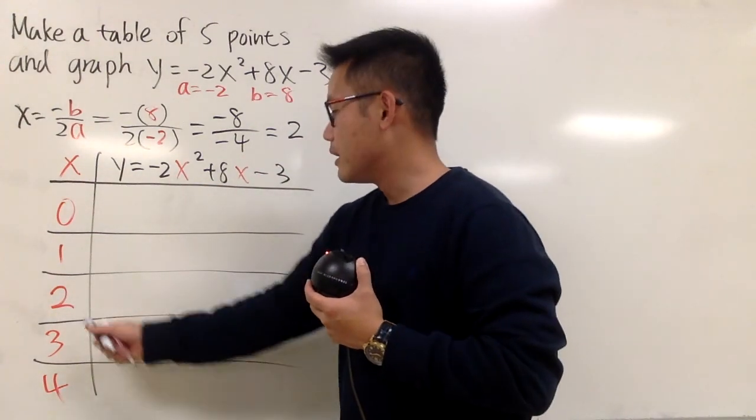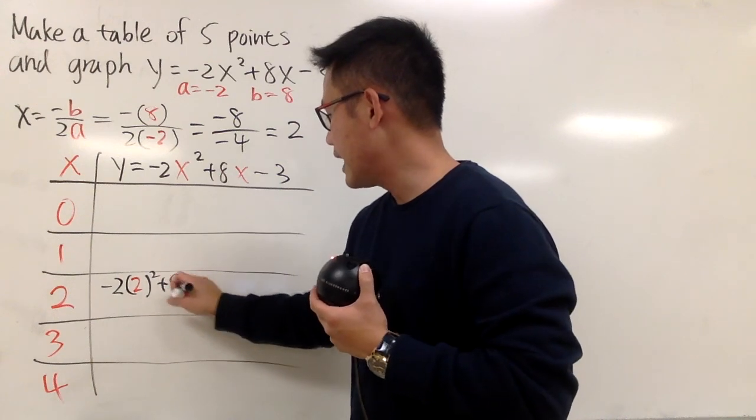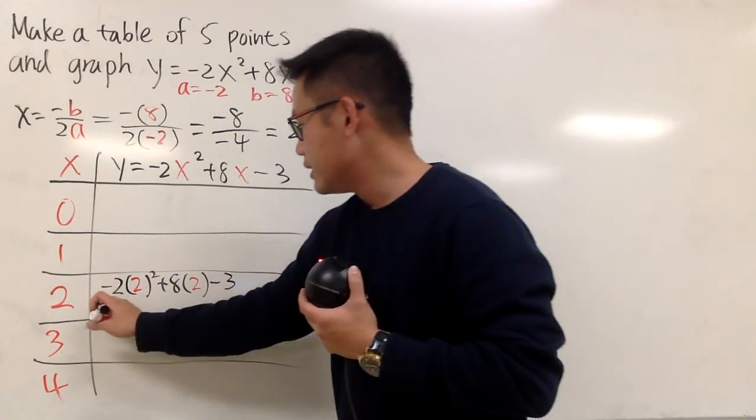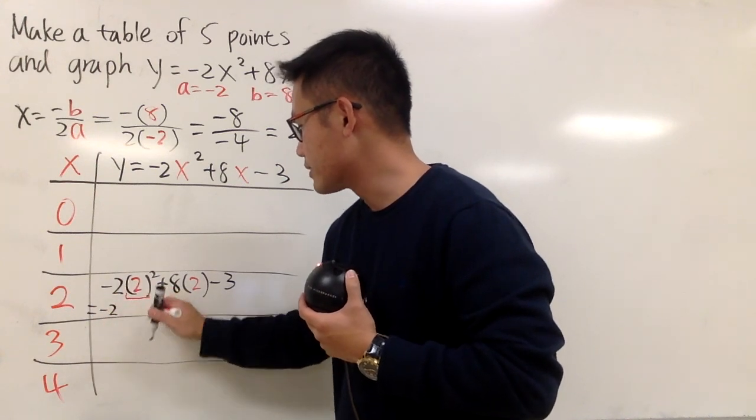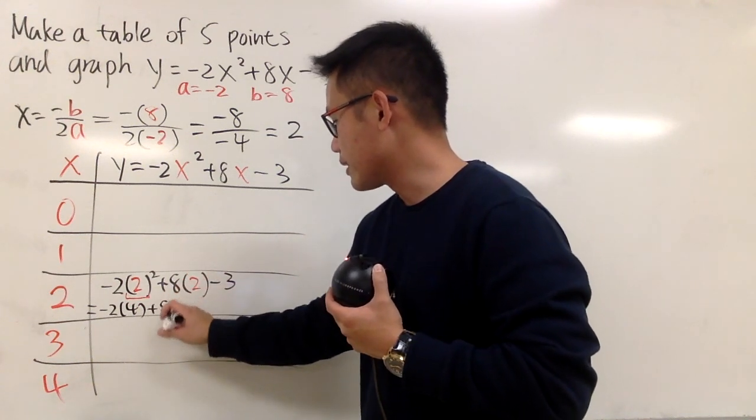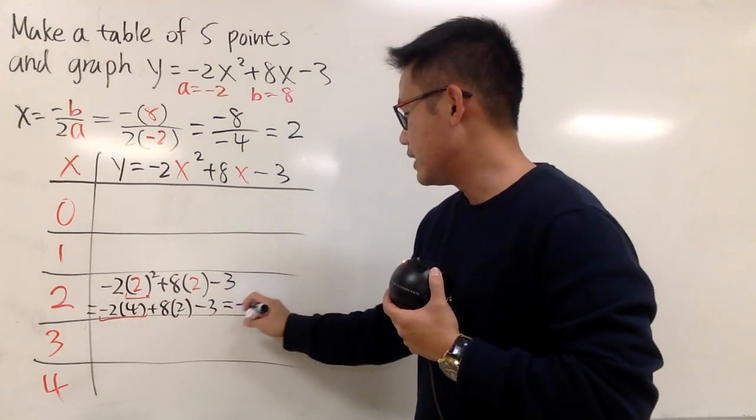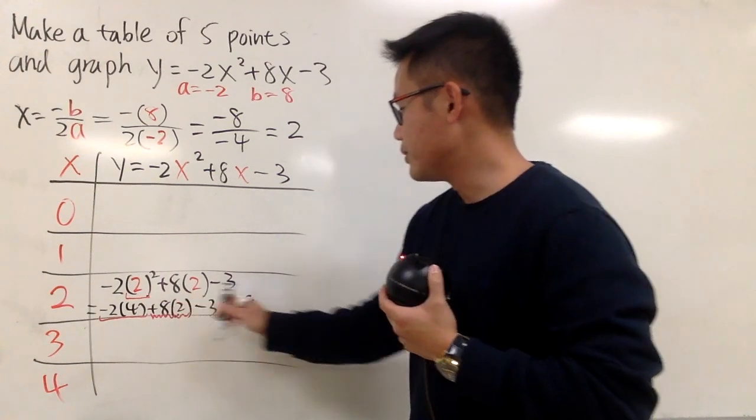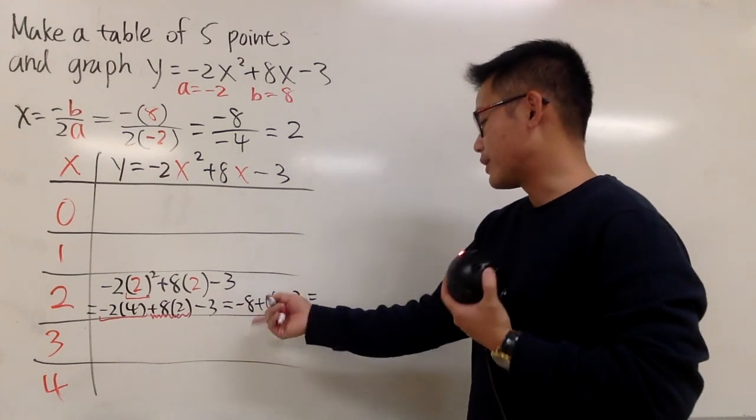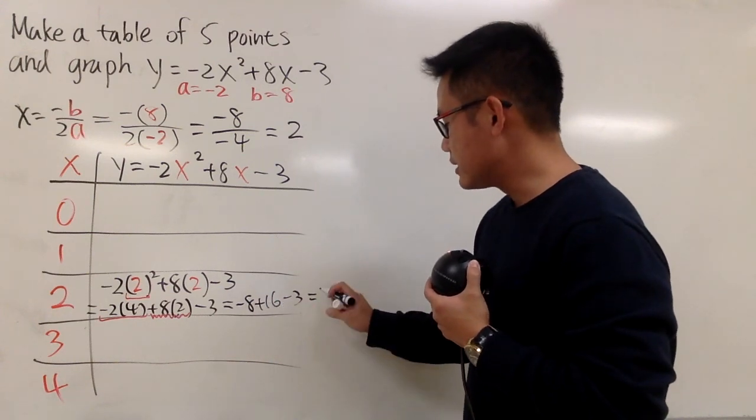And let's get the vertex first. Plugging 2 into here, we get negative 2 times 2 squared, and then plus 8 times 2, and then minus 3 like this. And now we are just going to work this out. This is still negative 2, but if you work this out, this is positive 4. And then this is going to be 2 times 8 times 2, and then minus 3. And now, negative 2 times 4 is going to be negative 8. And then 8 times 2 is plus 16, and then we have the minus 3 at the end. Negative 8 plus 16 is positive 8, and then minus 3 is positive 5.